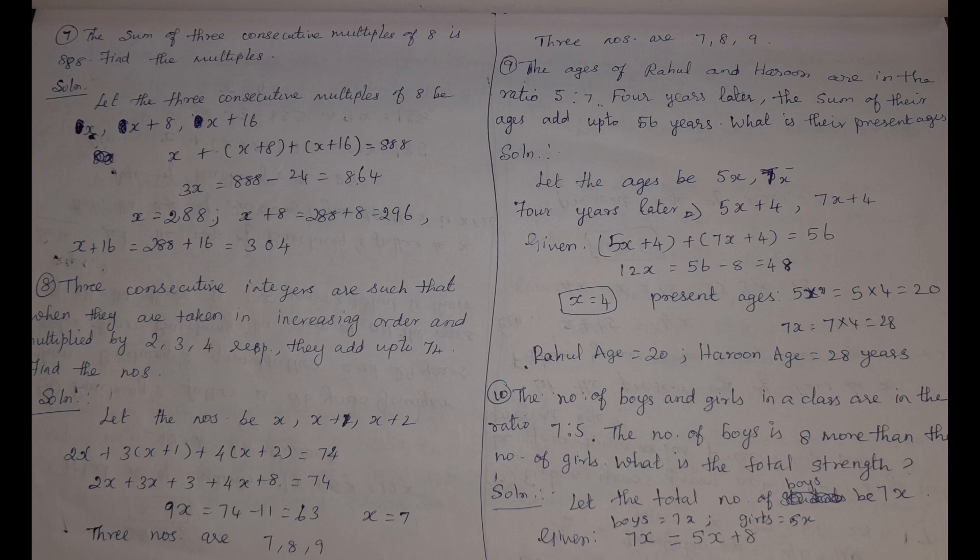Ninth problem: the ages of Ragul and Harun are in the ratio 5:7. Four years later, the sum of their ages adds up to 56 years. So: (5x + 4) + (7x + 4) = 56, giving 12x = 48, so x = 4. Present ages: Ragul is 20 years, Harun is 28 years.